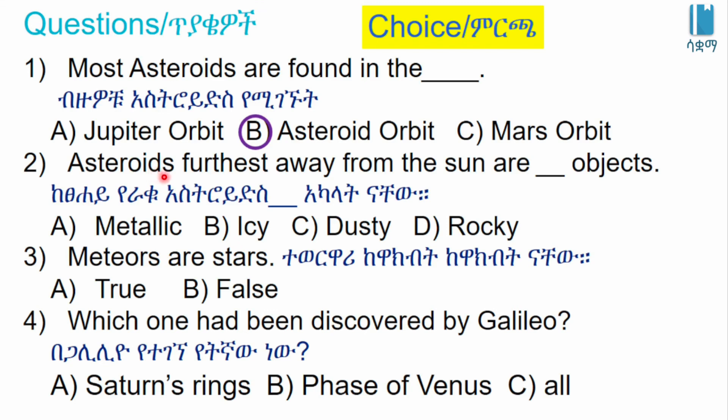Asteroids furthest away from the sun are blank objects. A: Metallic. B: Icy. C: Rocky. The answer is Rocky.